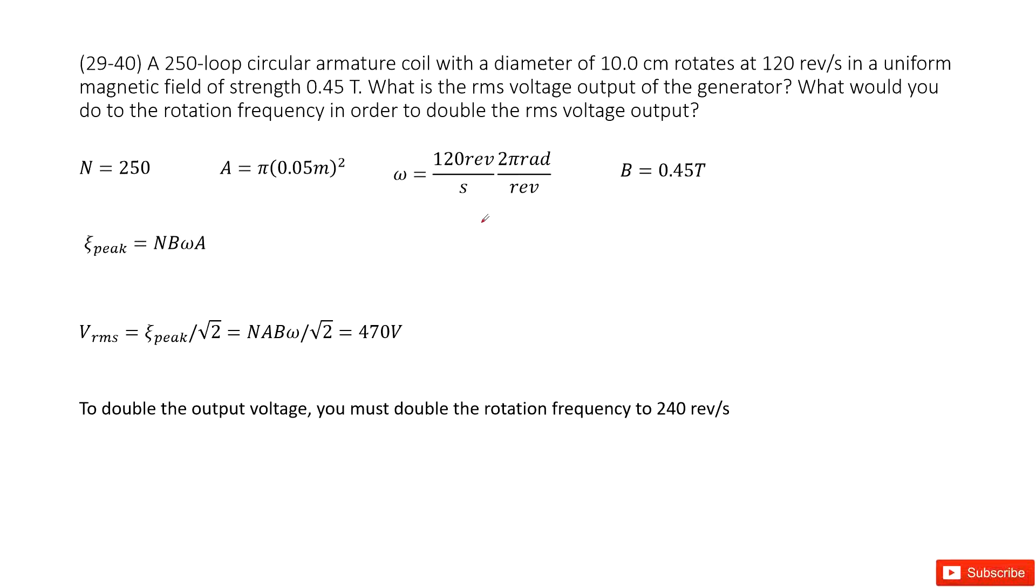So there, we have our generator. We need to find its RMS output voltage, right? Let's see what quantity is given. The given quantity is 250 loops, so N is given. The cross-sectional area is given, pi r squared. The diameter is given.